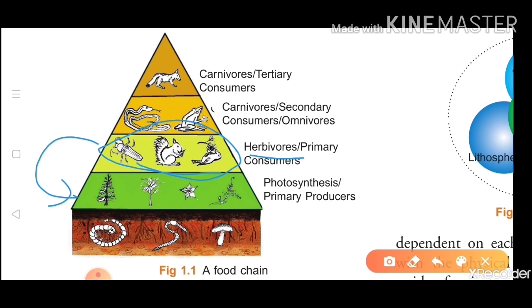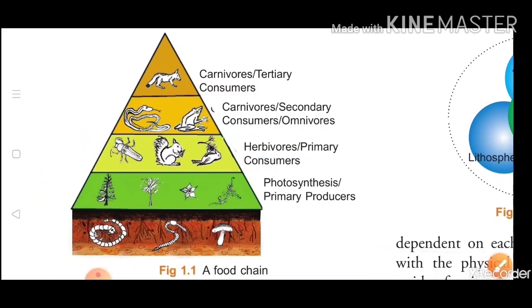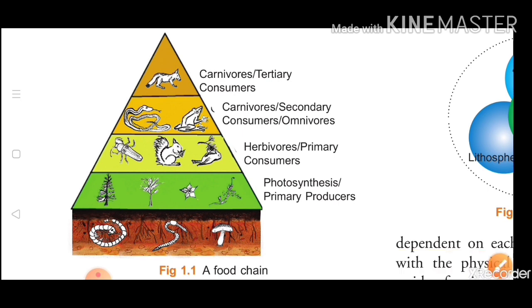Herbivores — why do we call them herbivores? Because they are vegetarian and they do not eat flesh. That's why these consumers are called herbivores, or primary consumers. They are dependent on the primary producers.